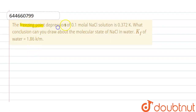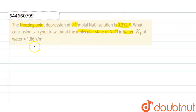Hello everyone. Here the question is: the freezing point depression of 0.1 molar NaCl solution is 0.372 Kelvin. What conclusion can you draw about the molecular state of NaCl in water? So here, first we will calculate the van't factor to find out what happens to the molecular state of NaCl in water.